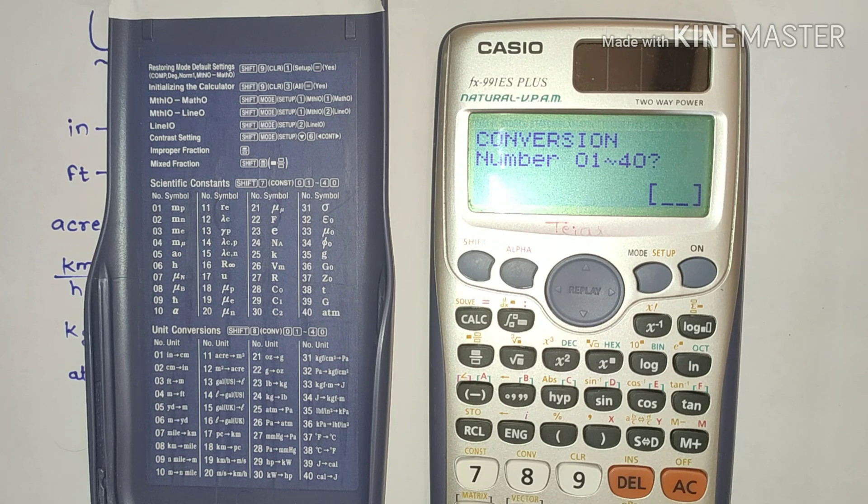Let's do some of them. First, I want to convert velocity from kilometer per hour to meter per second. You can see there is a number written in front of it, that is 19. So put 19. Don't press the equal button because it shows an error. Just put 19.